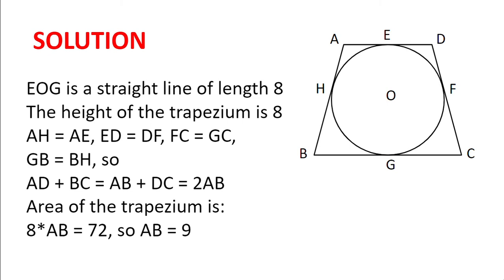Now, using the facts found in hint number 2, AH equals AE, ED equals DF, FC equals GC, GB equals BH, and so AD plus BC equals AB plus DC, or 2AB since AB equals DC.